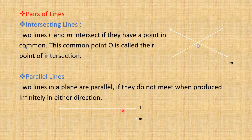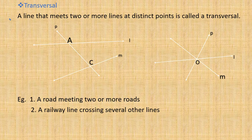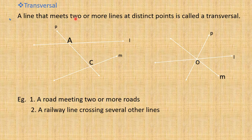Now we learn about transversal and angles made by the transversal. A line that meets two or more lines at distinct points is called a transversal. Here we have to take care of two points: the line must meet two or more lines, and also at distinct — meaning separate — points.